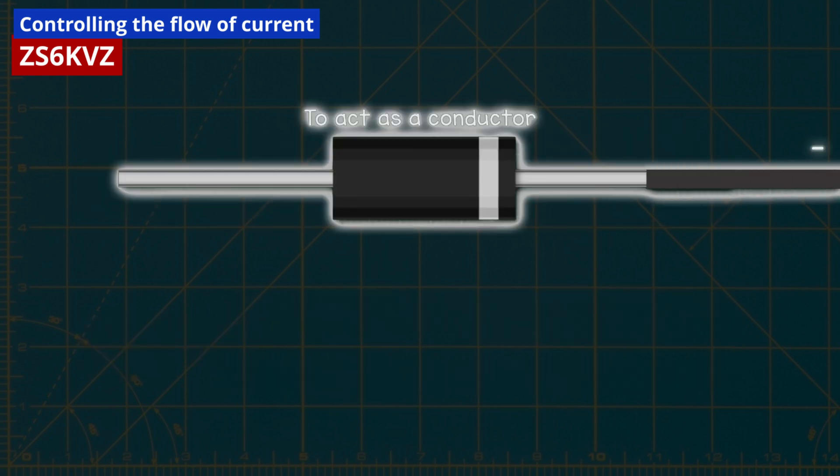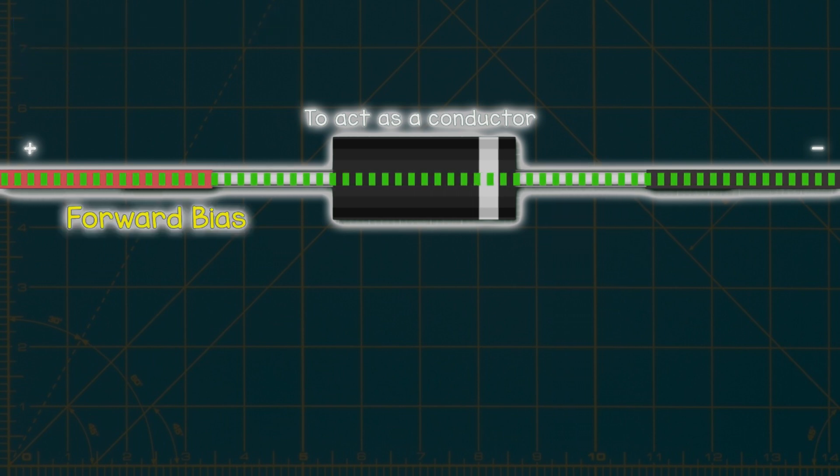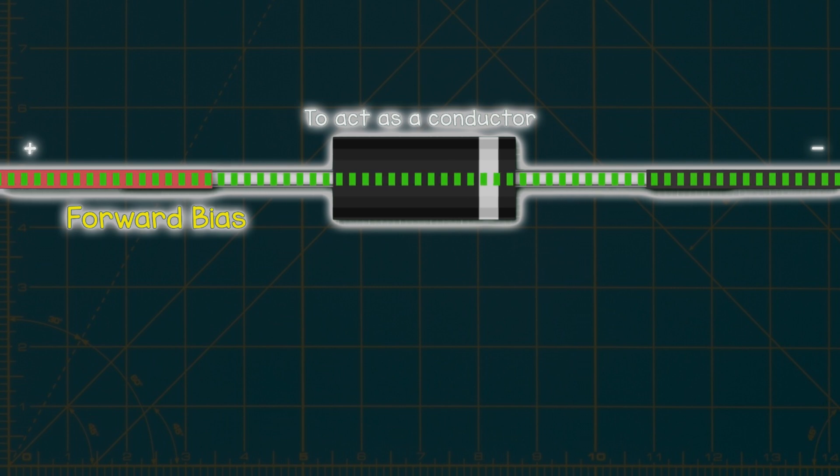For the diode to function as a conductor, the stripe end is connected to the negative side, while the black end is connected to the positive side. This setup allows current to flow and is referred to as the forward bias.